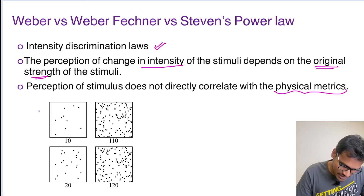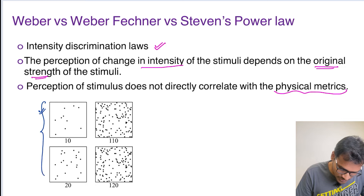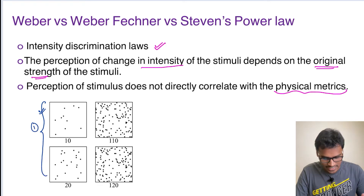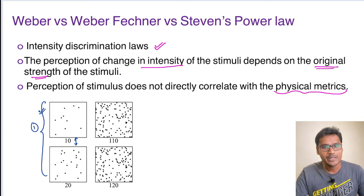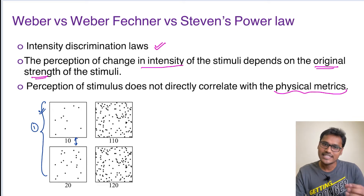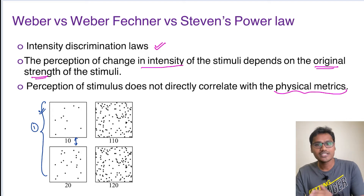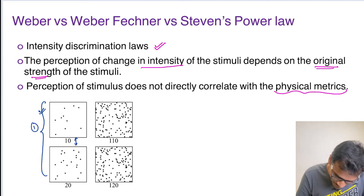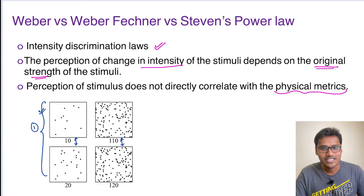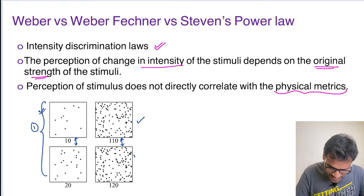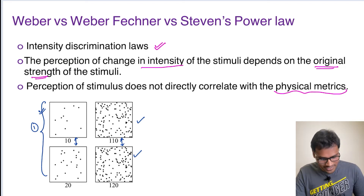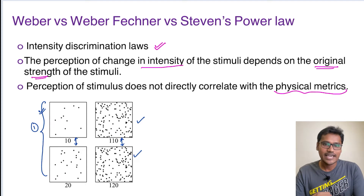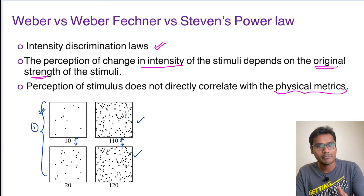Looking at this diagram: in section one, the upper image has 10 dots and the lower one has 20 dots — there is a noticeable difference. Now in section two, one image has 110 dots and the next has 120 dots. Is there any noticeable difference? Most of us will not be able to find one. Yet in both cases, only 10 dots were added. In one case we appreciate the difference; in the other we cannot.